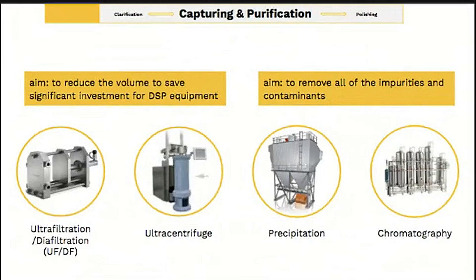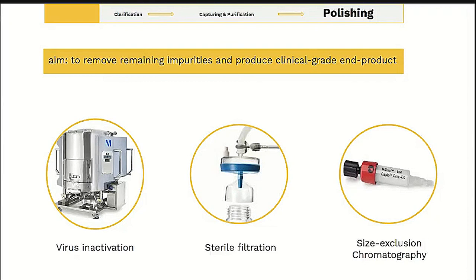Both processes can be performed simultaneously in the case of large volume processes. Finally, polishing will be done to remove the remaining impurities and produce a clinical grade end product. The first step is virus inactivation using formalin, followed by selective precipitation, incubation on ice to remove residual virus and formalin, and lastly chromatography. In addition, sterile filtration using a 0.2 micrometer filter is used to ensure maximum sterility. When baculovirus and VLP have sizes with a different order of magnitude, size exclusion chromatography can be used as a preparative approach for VLP polishing.